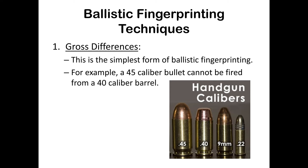One of the most obvious differences would be a gross difference — real simple. A .48 caliber bullet, all the way to the left in the picture, could not be put into a gun made to shoot a .22. A .22 caliber cartridge would not fit into a .45 caliber firearm. So that is a gross difference.